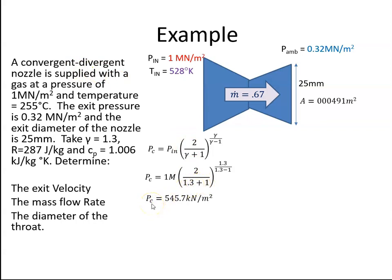So if I have the critical pressure, I also can calculate the critical temperature, basically using the same formula, except we don't have the power here. And the temperature is 528 on the inlet, gamma was 1.3, so the critical temperature works out to be 459 degrees Kelvin.